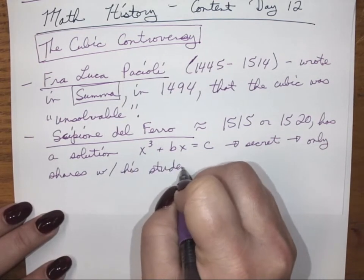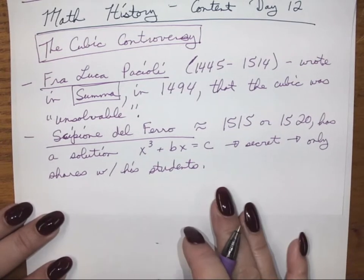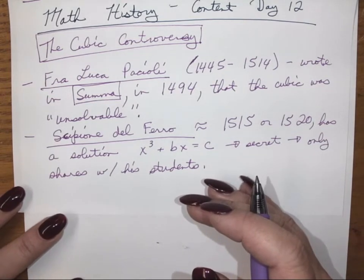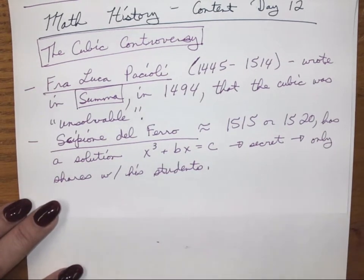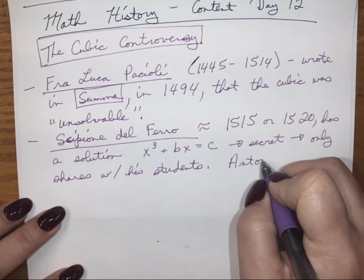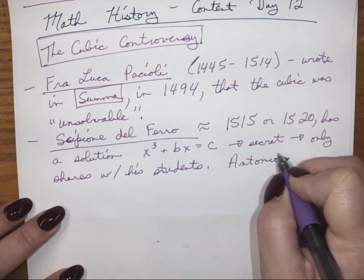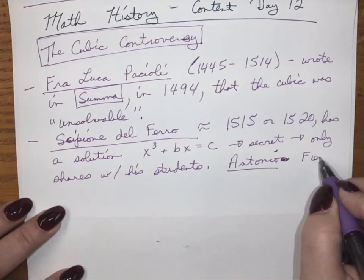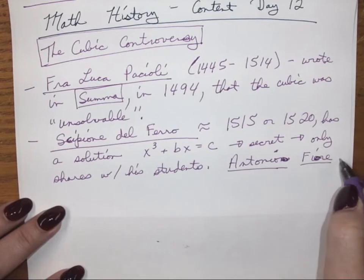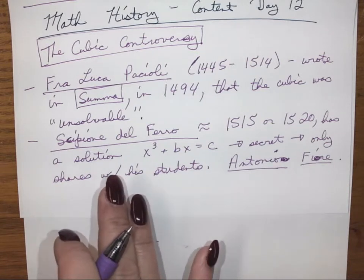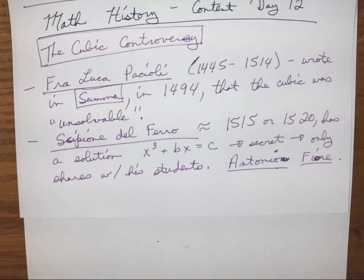But what del Ferro does is keep it a secret and only share it with his students. We're in a time period of math competitions where having more students gets you more money, more notoriety, more prizes. So he wants knowledge that other people don't have in order to attract students. In particular, he shares it with one student: Antonio Fiore. They have solutions to just that format x³ + bx = c.